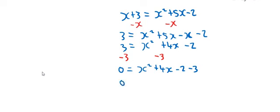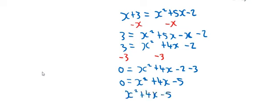So 0 equals x squared plus 4x minus 5, and I'll put it as x squared plus 4x minus 5 equals 0, just to make it look like a normal quadratic to solve. Now it looks more familiar.